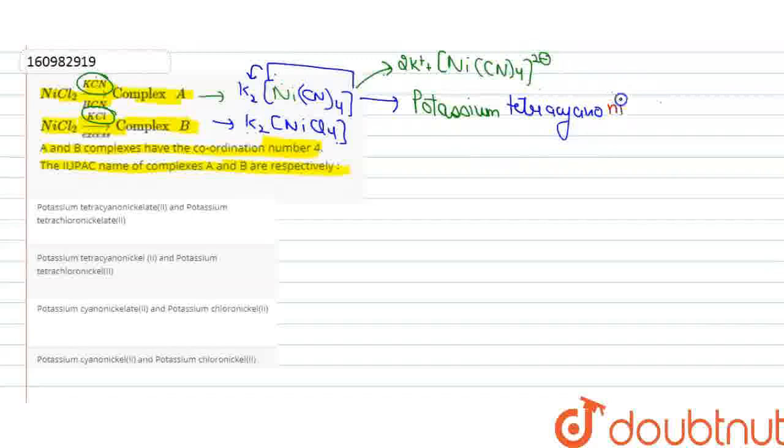Tetracyanonickel complex, negative nickel. Now, x cyano minus 1 minus 4 is equal to minus 2, x plus 2. So 2, this.